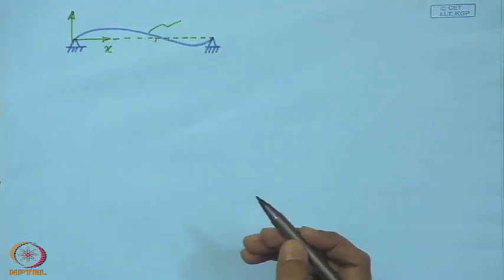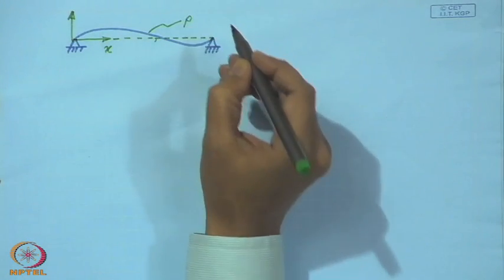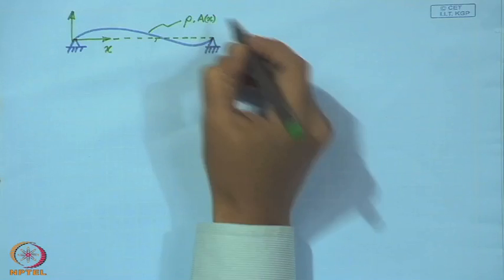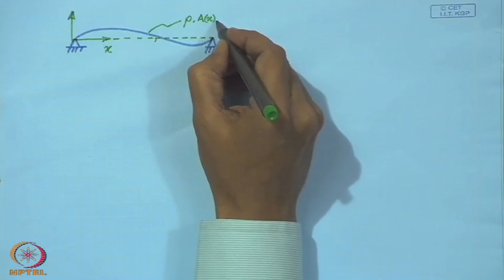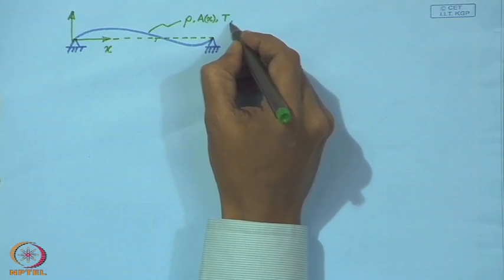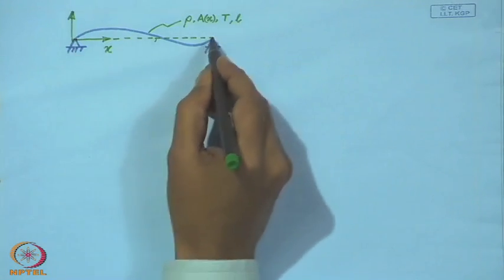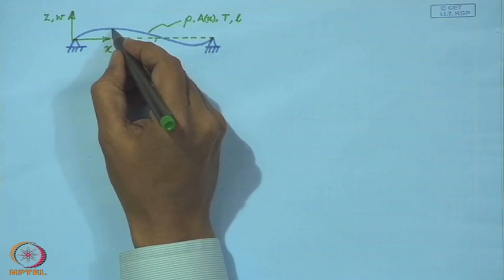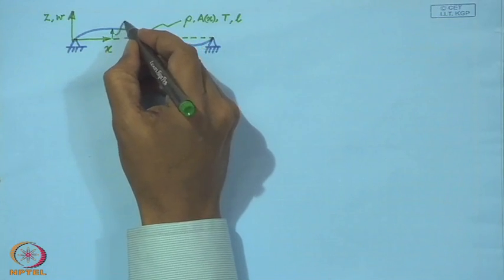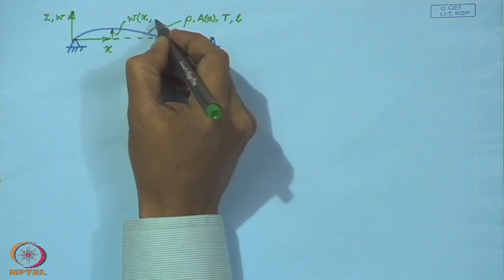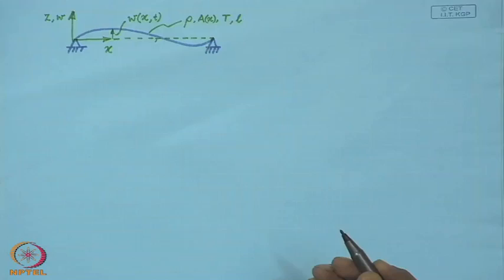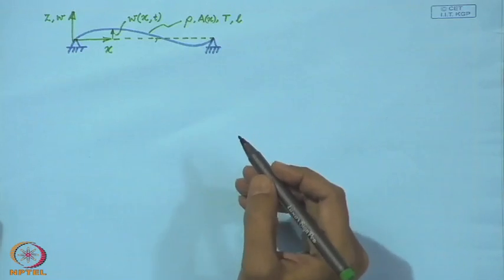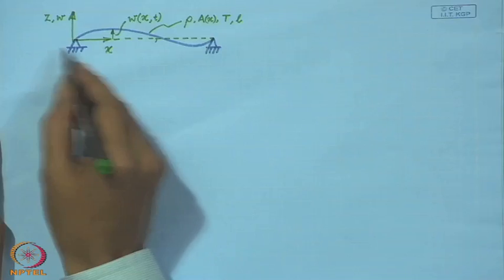Consider a string made of a material of density rho, with an area of cross-section which may be a function of the positional coordinate x. It is under a tension T and has a length L. The transverse motion of the string is measured by the variable w at a location x at a time instant t. This shows a stretched taut string which has been displaced from its equilibrium position, which is the x-axis.